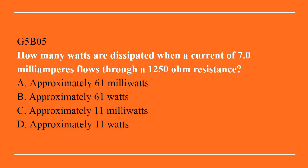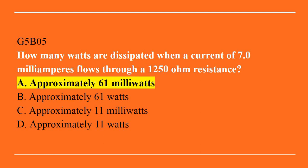G5B05: how many watts are dissipated when a current of 7.0 milliamperes flows through a 1250 ohm resistance? A. Approximately 61 milliwatts. B. Approximately 61 watts. C. Approximately 11 milliwatts. Or D. Approximately 11 watts. Answer is A: approximately 61 milliwatts.